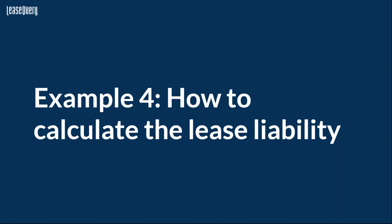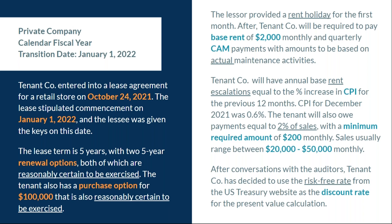Example 4 from the Ultimate Lease Accounting Guide: How to Calculate the Lease Liability. For this example, we're dealing with Tenetco, a private company with a calendar year end and a January 1st, 2022 transition date. This agreement has a lease term for five years with two five-year renewal options, both of which they've already decided are reasonably certain to be exercised.